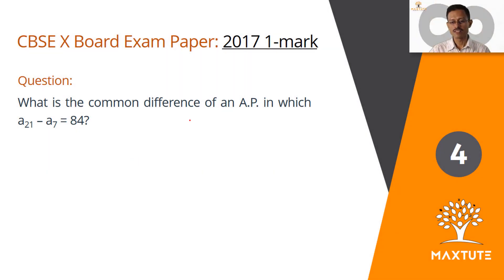This is a very simple question that appeared in 2017, a one-mark question from the topic arithmetic progression. What is the common difference of an AP in which A21 minus A7 is equal to 84?